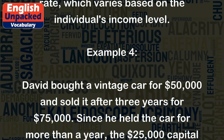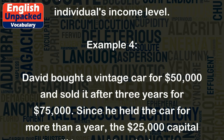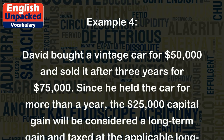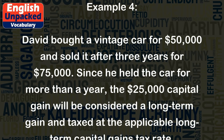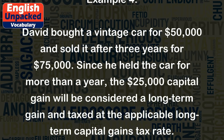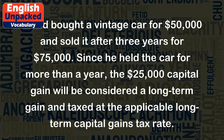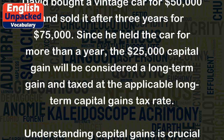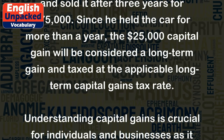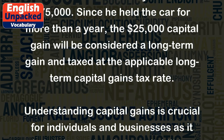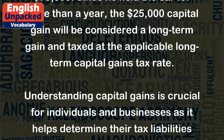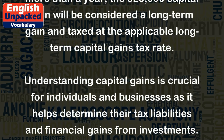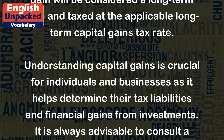Example 4. David bought a vintage car for $50,000 and sold it after three years for $75,000. Since he held the car for more than a year, the $25,000 capital gain will be considered a long-term gain and taxed at the applicable long-term capital gains tax rate.